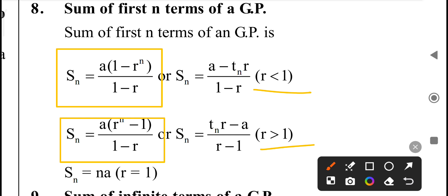When R is greater than 1, the formula is A times (1 minus R raise to n) divided by (1 minus R). R means common ratio.